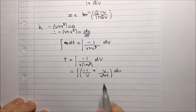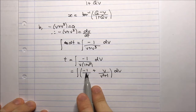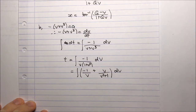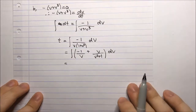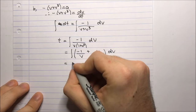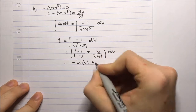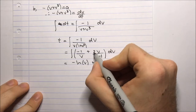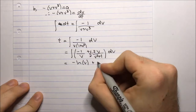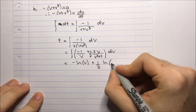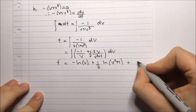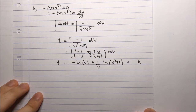Integrating: negative 1 over v integrates to negative log v. For v over (v squared plus 1), multiplying by 2 and placing a half outside gives a half log(v squared plus 1). So t equals negative log v plus one half log(v squared plus 1) plus constant k. Applying initial conditions: when t equals 0, v equals q, giving 0 equals negative log q plus one half log(q squared plus 1) plus k, so k equals log q minus one half log(q squared plus 1).